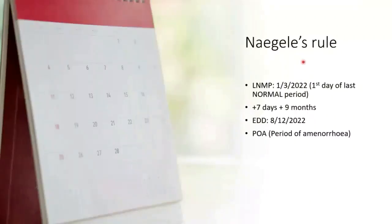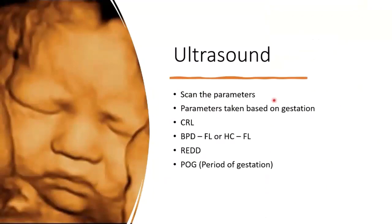For Naegele's rules: if the LNMP is 1st of March 2022, you add plus seven and plus nine months to get 8th of December. When dating by this method, we call it period of amenorrhea, or POA. For example, if today the patient is eight weeks, you document it as eight weeks POA based on Naegele's rule. For ultrasound, you scan specific parameters depending on gestation — crown-rump length, BPD with femur length, or head circumference with femur length. The resulting date is called the REDD and we call it period of gestation, POG, instead of POA.